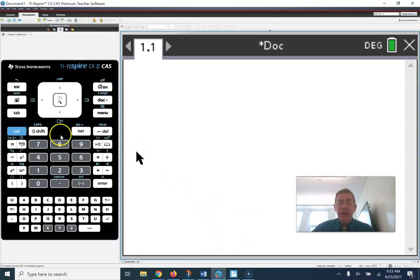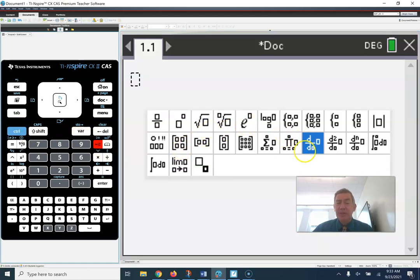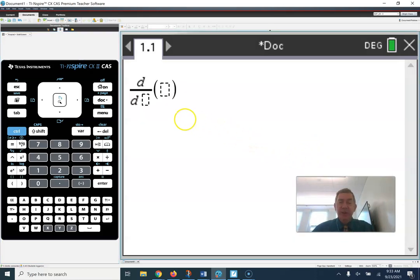Very straightforward. The first method, if you hit this button, you'll notice that derivative d something, d something, shows up. You have to tell it what variable it is. You have to tell it what your function is.